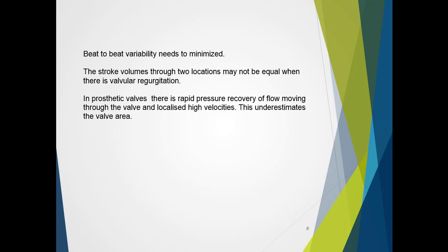The stroke volume through two locations may not be equal when there is valvular regurgitation. When there is aortic regurgitation, the stroke volume through the left ventricular outflow tract, as I described earlier, will be greater than what moves through the mitral valve. An additional problem may be encountered when we use peak velocities for prosthetic valves. As there is a rapid pressure recovery of flow moving through the valve and localized high velocities, this method may underestimate the valve area.